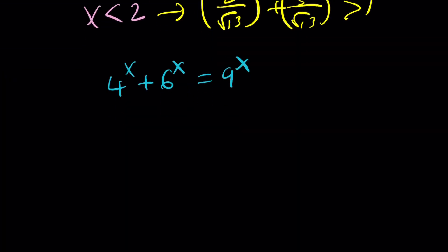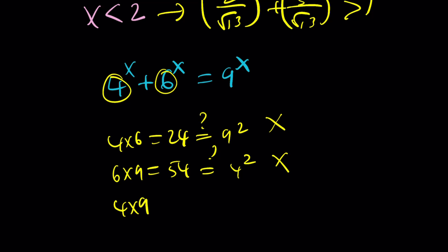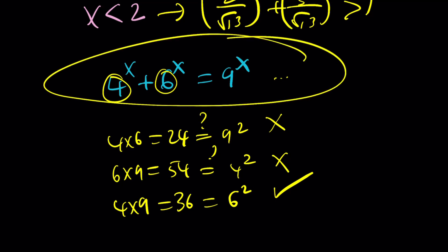But here's the thing: take 2 of these numbers and multiply them, and see if the answer is the square of the third number. 4 times 6 is 24, not 9 squared. 6 times 9 is 54, not 4 squared. 4 times 9 is 36, which is 6 squared. So divide everything by 9 to the power x and you get a nice equation with a golden flavor. I digress.